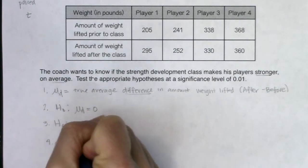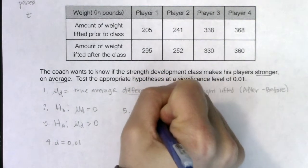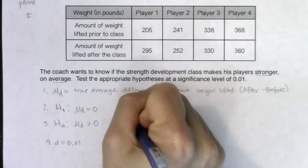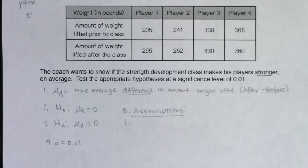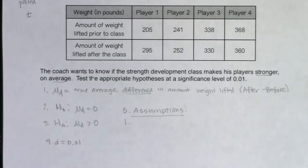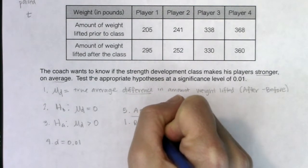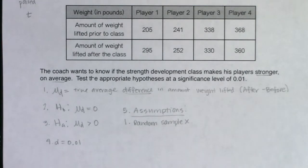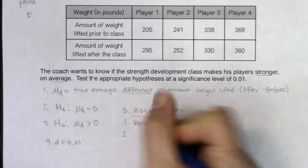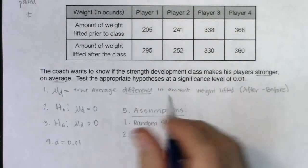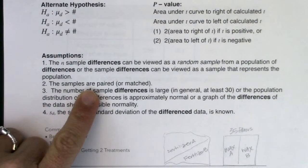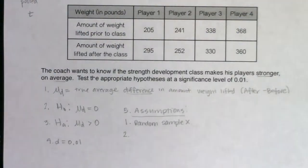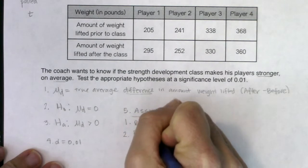Alpha equals one percent. Now let's check the assumptions. Did we have a random sample? Looking back at the problem, it says the coach asked four of his players — this was not a random sample, it was selected by whatever means the coach wanted. Not a deal breaker, but something to take note of. For the second assumption: the samples are paired data — and in this case they are. I'll write 'these are paired data sets.'